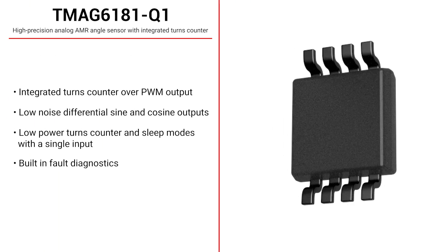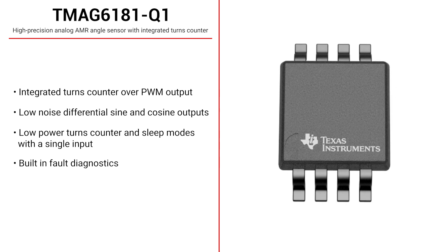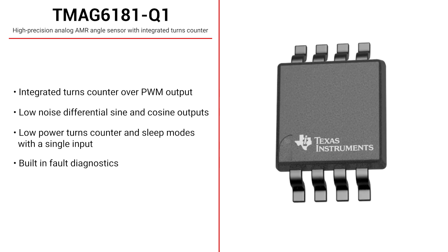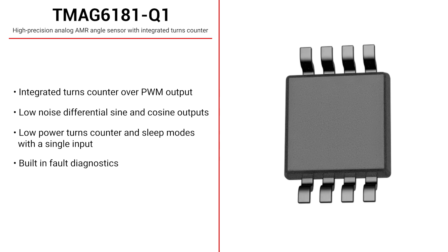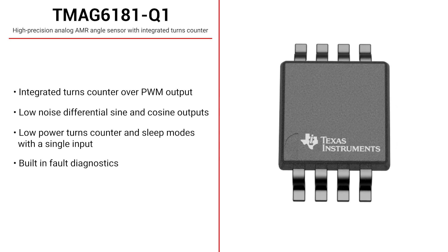TMAG-6180Q1 uses the same AMR structure and Hall Effect Latch, but replaces the quadrature output from TMAG-6180Q1 with a dedicated pin to control low power modes and a separate PWM turns counter. Relative rotary position can be tracked using the turns counter for up to 256 full revolutions.